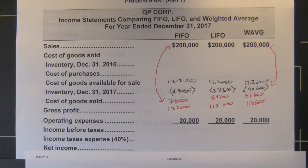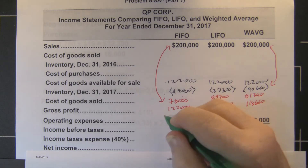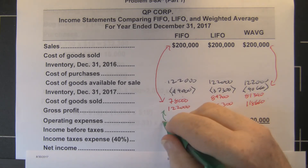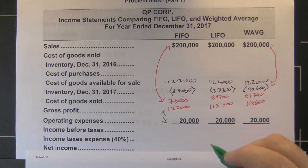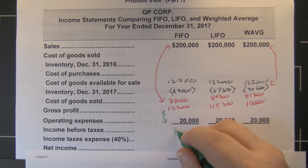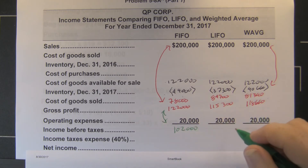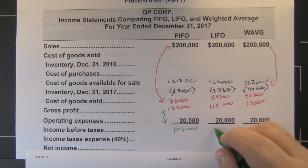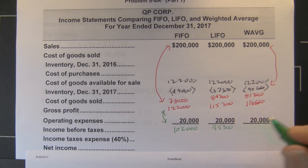We all have the same operating expenses, because operating expenses are not dependent on whether you use LIFO, FIFO, weighted average, or whatever — we've got $20,000 in operating expenses. Subtracting that from gross margin gives us $102,000 under FIFO, $95,300 under LIFO, and $98,660 under weighted average.